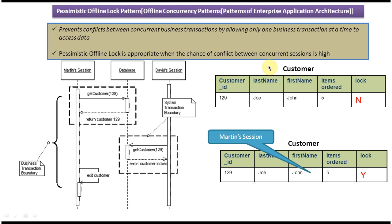The key implementation point of the pessimistic offline lock pattern is maintaining the lock column. Using the lock column, we can identify whether a particular row is currently being used by another session. If it is, we do not give that row to another session, thereby avoiding conflicts. This is the essence of the pessimistic offline lock pattern. Thanks for watching.